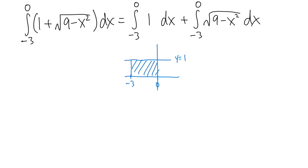For the first integral, we have y = 1. We care about from negative 3 to 0, and we need to find the area of this region, which is just a rectangle. The area is base times height. The base is 3, the side is 1, so the area is 3 times 1 equals 3. The first integral gives us 3.